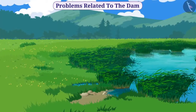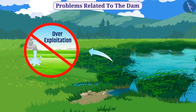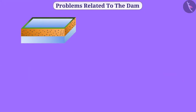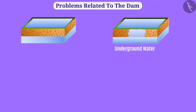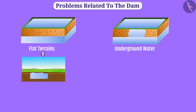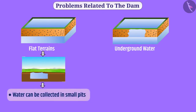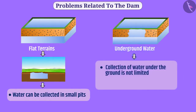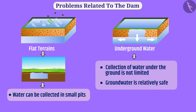By giving control of these local structures back to local people, proper management will be done and over-exploitation can be reduced. There are many benefits to increasing underground water levels compared to surface water storage. A small amount of water collected in small pits can be stored for only a few months, whereas underground water is not limited in collection capacity as it spreads to surrounding areas and can be stored for a long time. Problems such as water pollution and mosquito breeding can happen in small surface pits, while underground water is relatively safe.